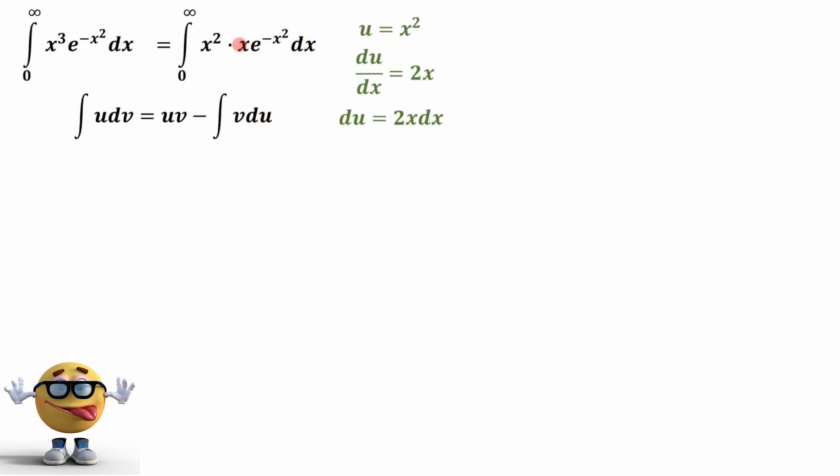Now the other side of this integral right here, this is our dv, which is right here. We've got u as x squared, so dv is everything else. So that's what we've defined right here.